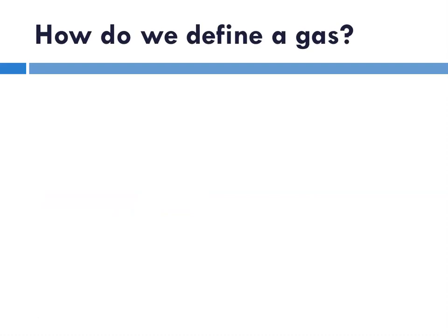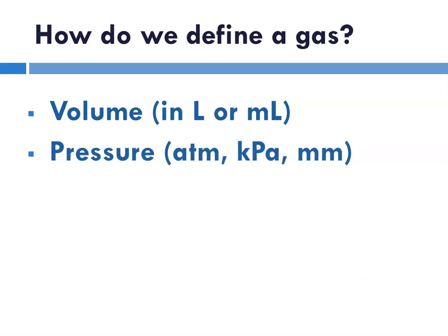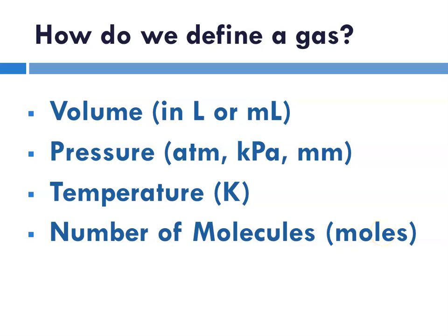So, what do we need to know to define a gas? In order to define a gas, you need its volume in liters or milliliters. You need to know the pressure, whether it's expressed as atmospheres, kilopascals, or millimeters. And the temperature, and for gases, we only express the temperature in Kelvin. And the number of molecules or moles. If you know those four things about a gas, you can pretty much completely define the gas.